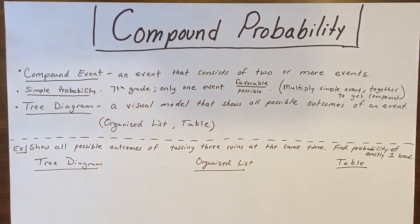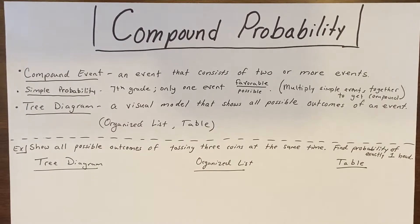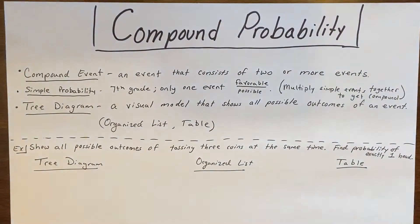In this video we're going to talk about compound probability. You've had some experience with probability in the past. In seventh grade you talked about simple probability where you're just dealing with one event — one thing that's happening. So it could be you roll one six-sided die and find the probability that you roll a one, or you flip a coin one time and find the probability it lands on heads. Those are simple events and that's kind of what you've worked with in the past.